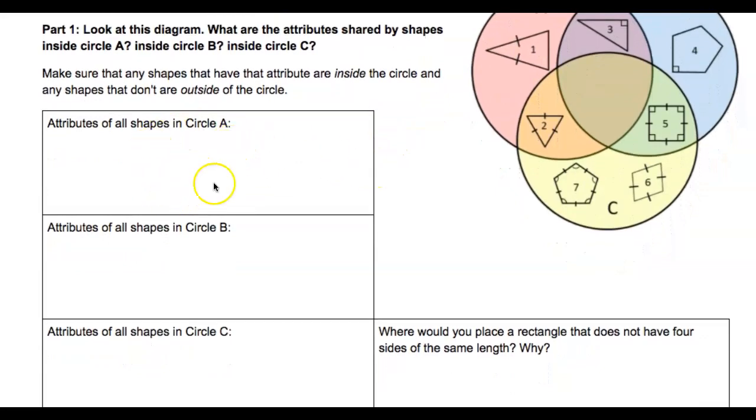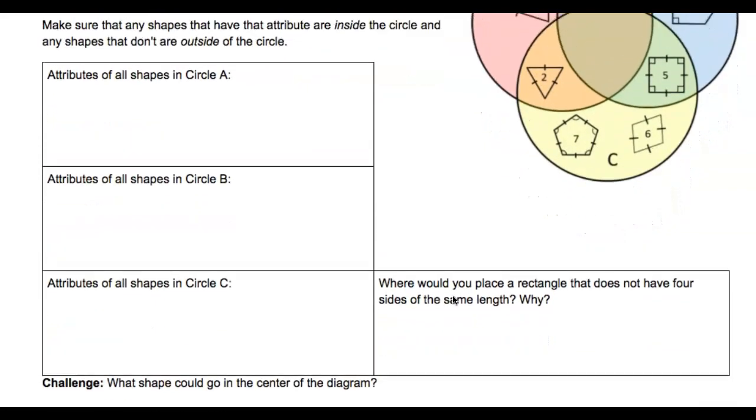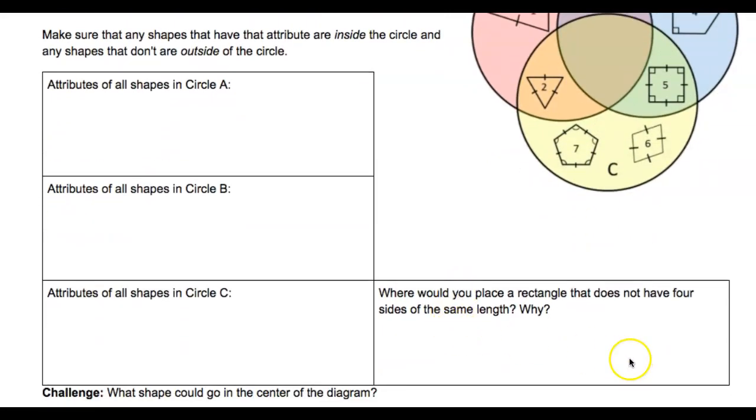Go ahead and write the attributes in these boxes. It says, where would you place a rectangle that does not have four sides that are the same length? So consider a rectangle that does not have four equal sides. Where would that shape fall? And then explain why.